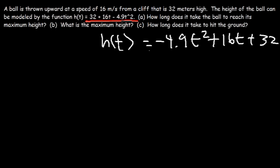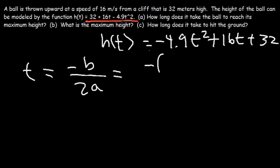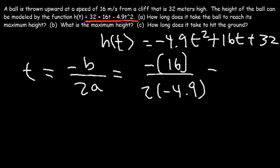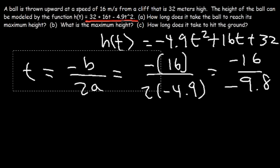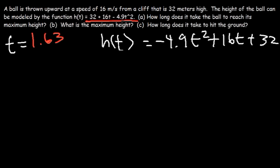Using t equals negative b over 2a: b is 16 and a is negative 4.9, so 2a is negative 9.8. The two negatives cancel, giving t equals 16 divided by 9.8, which equals approximately 1.633 seconds. This is the time it takes to reach the maximum height.